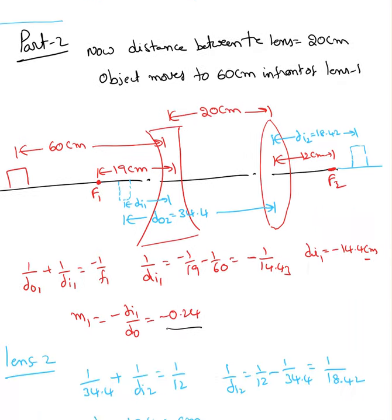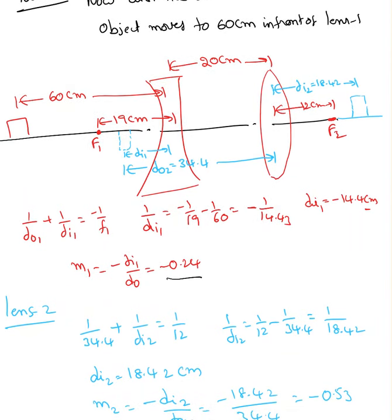This image is going to act like an object for the second lens. The distance of object 2 is 34.4 cm.